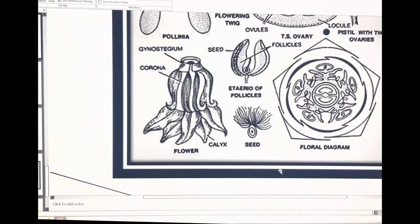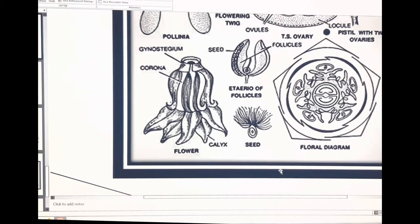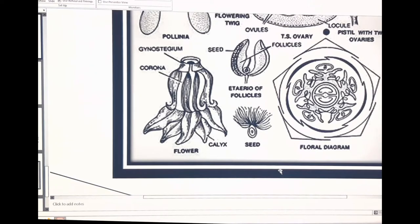Then the stamens. Stamens are equal to the petal number — 5 in number. In Sinonkaidee, stamens have two parts: filaments and anthers. Stamens are 5 in number and very short in structure. Anthers are also 5 in number.